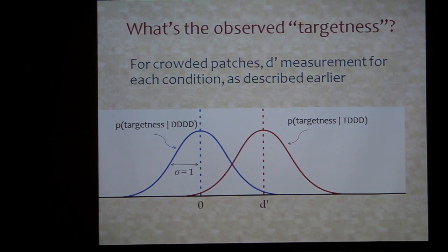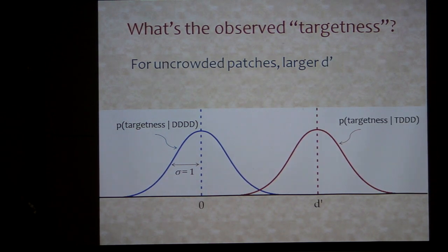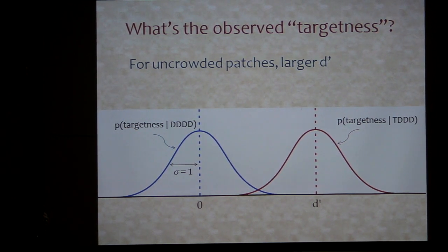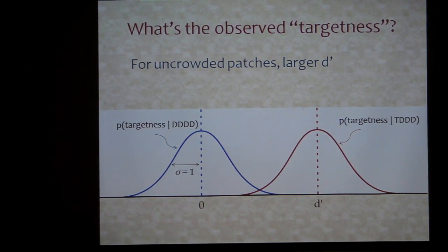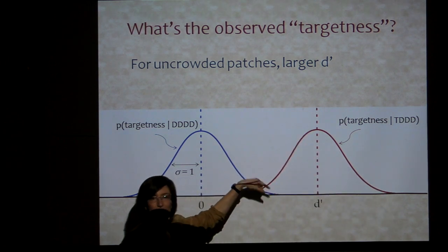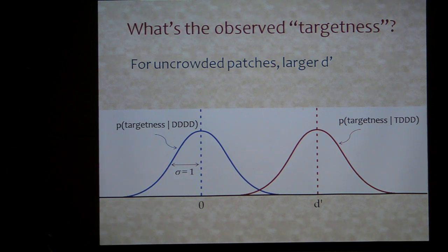Where do you get the d-prime? There are two different stories depending on whether a patch is crowded or not. If it's crowded, you take it from the experiments I showed before. If it's not crowded, you want to be a lot better at knowing whether it's a target or distractor — maybe not 100%. You take the d-prime from the easiest search condition for those cases. So in the simulation you're drawing an observation from one distribution if the patch really has a target, and from another if it doesn't.